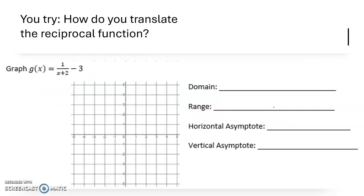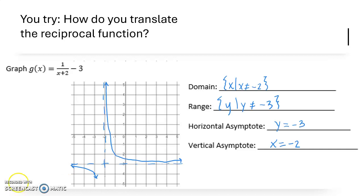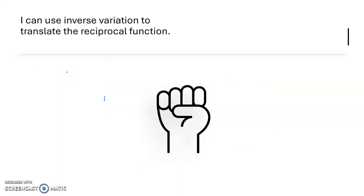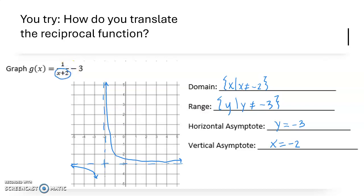Here's one for you to try — push pause and return when you have tried this graph. Here's my graph for this function. The domain is x such that x is not equal to negative 2 — I can see a shift to the left 2, which changes the vertical asymptote to x equals negative 2. There is also a shift down 3, changing the horizontal asymptote to y equals negative 3. I plotted the two special points and sketched the graph approaching those asymptotes without crossing them.